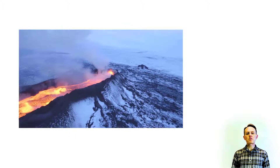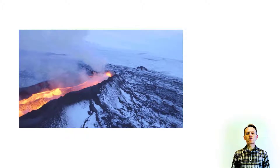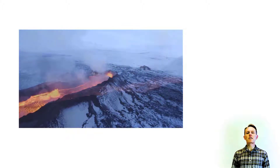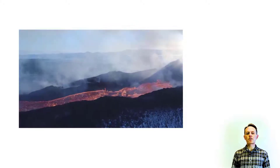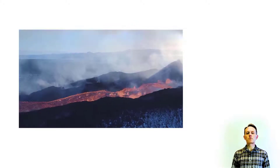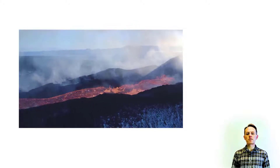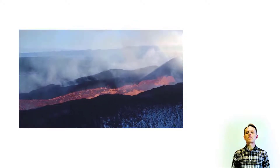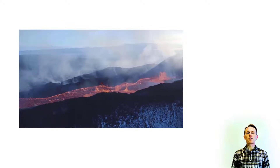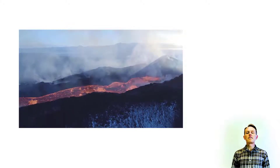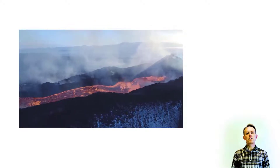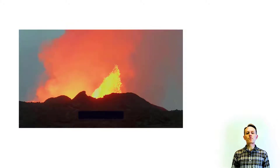The density of magma at depth inside the Earth ranges typically from 2600 to 3000 kg per cubic meter, so it is less dense than the mantle or crustal rocks at deep levels. Therefore, magma will have a tendency to rise because of its buoyancy.